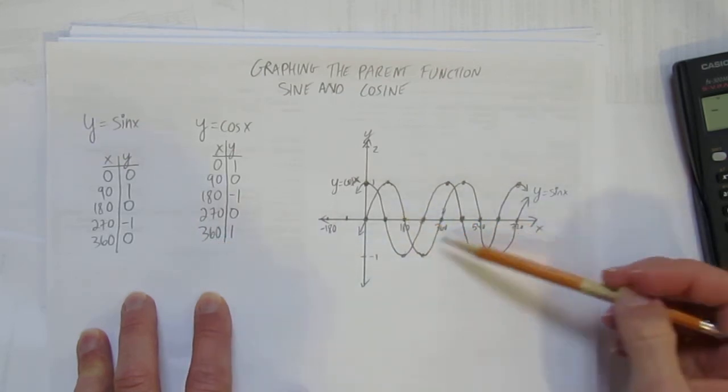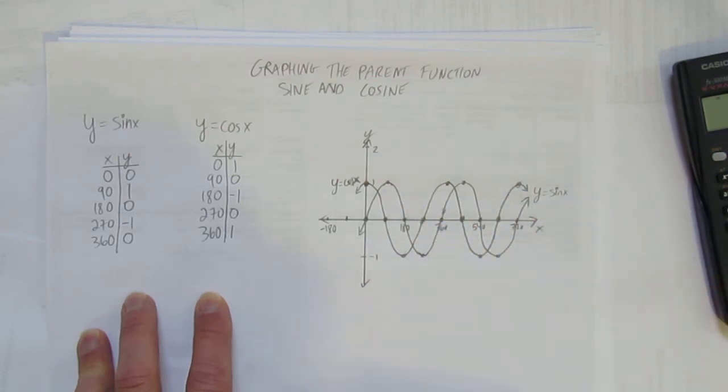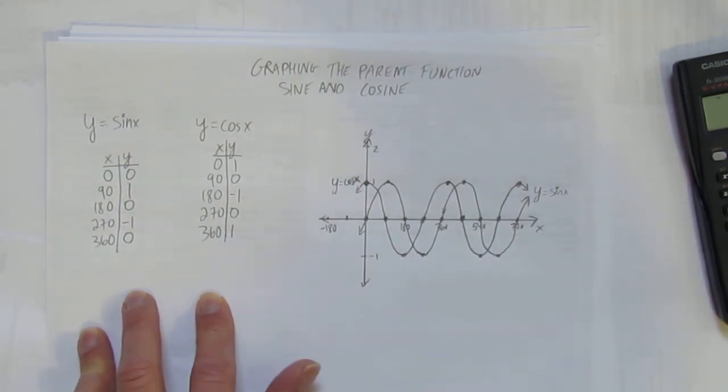Putting the points and even extending those points in their pattern to make two full cycles, two full waves of each equation. And we've done it. We've graphed the parent functions of sine and cosine.